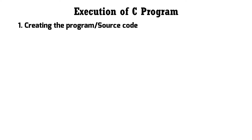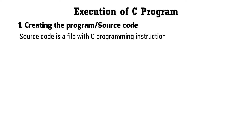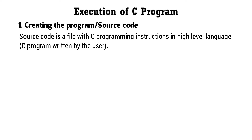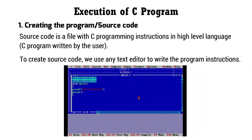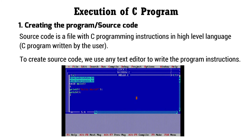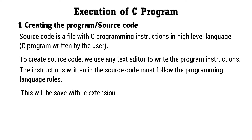First we will understand the first step, that is creating the program or source code. The source code is a file with C programming instructions written in high level language — a C program written by the user. To create the source code we use any text editor to write the program instructions. The instructions must follow C programming language rules, and the file is saved with the .c extension.